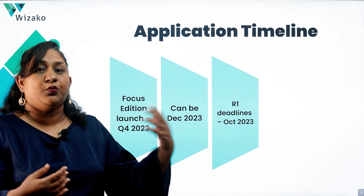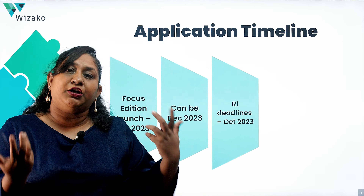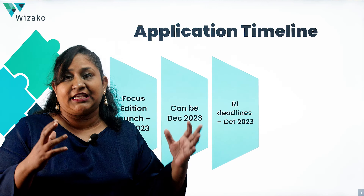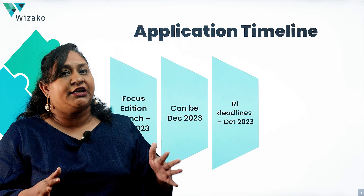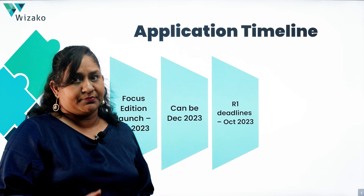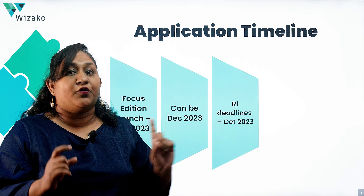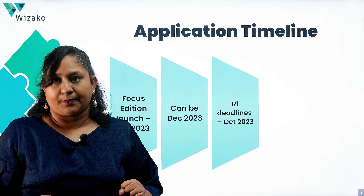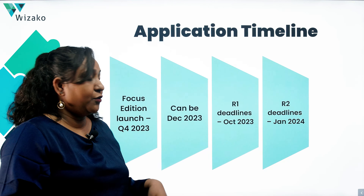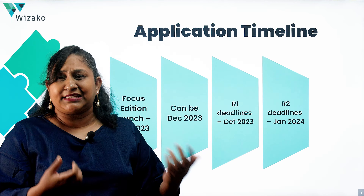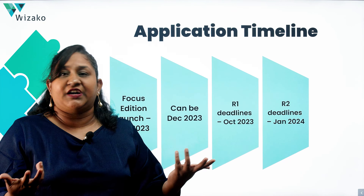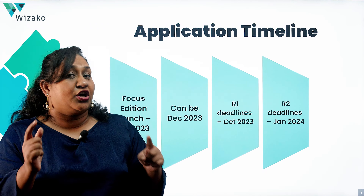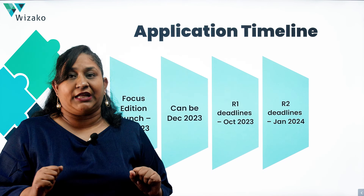What does that mean for people applying to 2024 MBA programs? Round 1 deadlines are typically in October, which means if you want to do justice to your application essays and the rest of your application, you probably need to write your GMAT by September — and the Focus Edition will definitely not be released by then. If you want to apply in Round 2, those deadlines fall in the last couple of weeks of December and the first 10 to 15 days of January 2024.